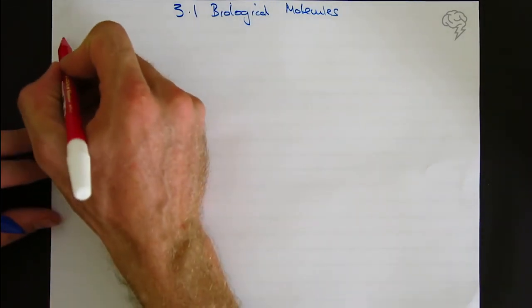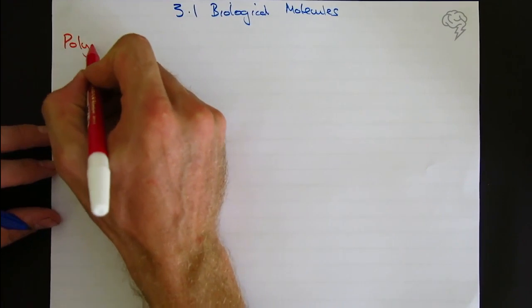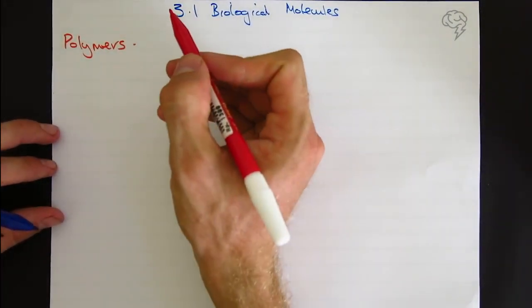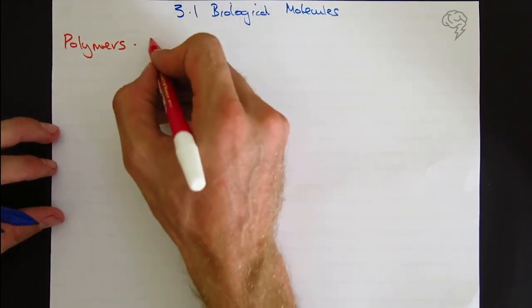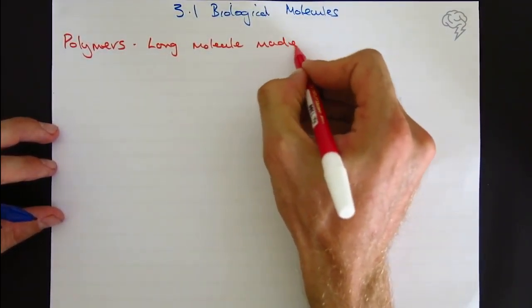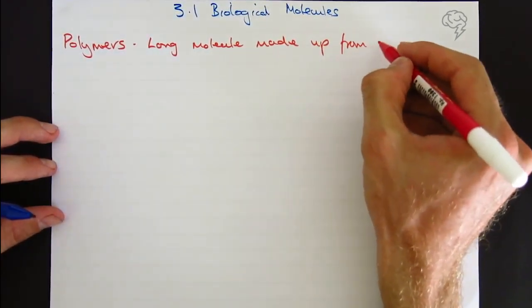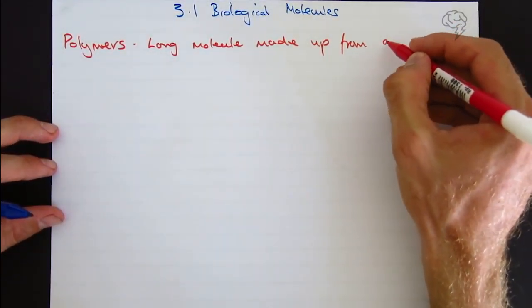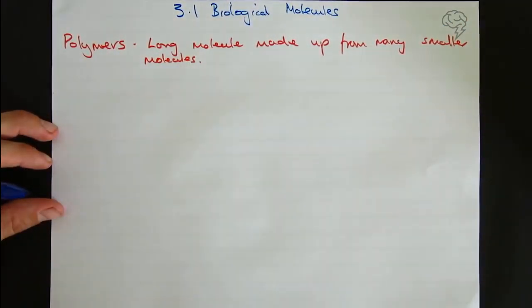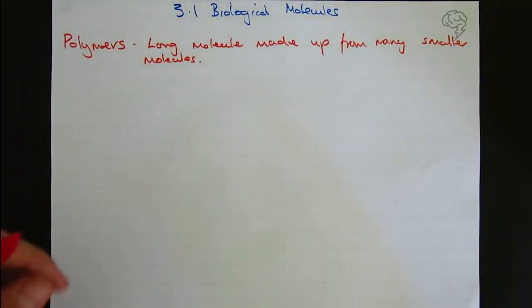These key terms are exactly the ones you need to use in the exam to get the marks. We've got polymers. Poly from many, a polygon, is a long molecule made up from lots of or many smaller molecules.